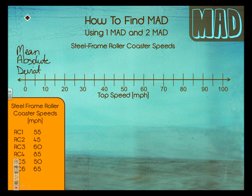Alright — mean, that's an average. Absolute just means that it's a distance from zero. It doesn't matter if it's positive or negative, so it always looks like it's positive. And deviation means to get off course, or to change or vary.